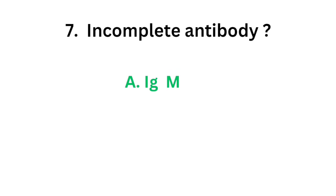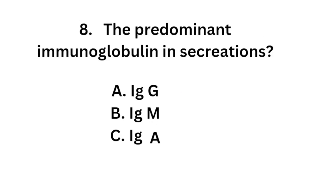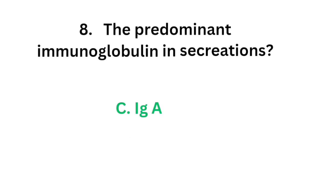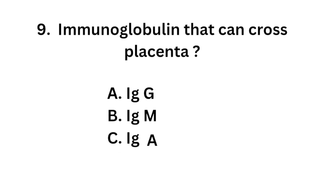The correct answer is Option A, IgG. Question 8. The predominant immunoglobulin in secretions: Option A, IgG; Option B, IgM; Option C, IgA; Option D, IgD. The correct answer is Option C, IgA.